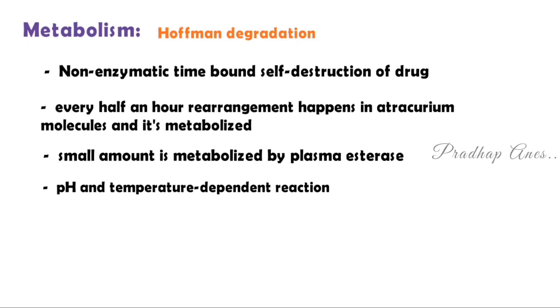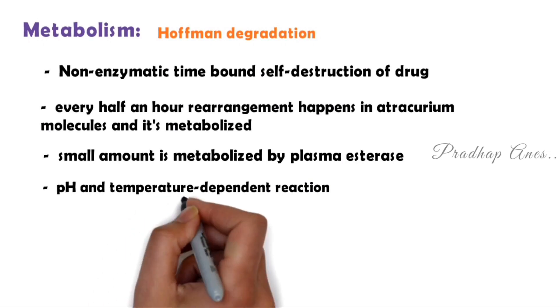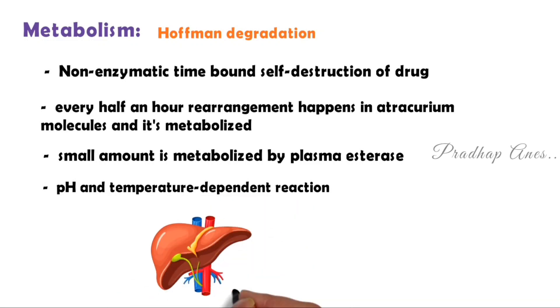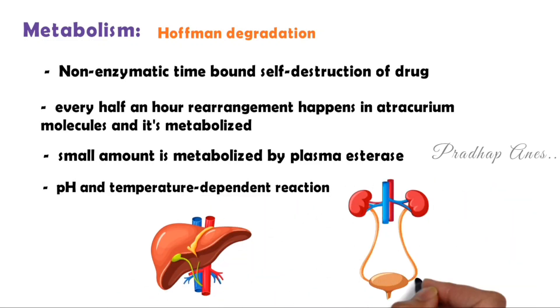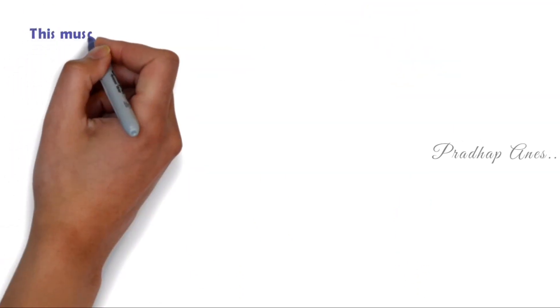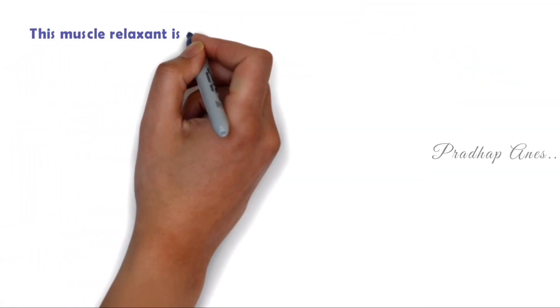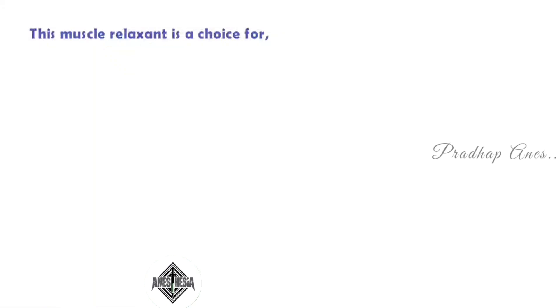Since it is metabolized by Hoffman's degradation, it doesn't need the liver and kidney for its metabolism. So this muscle relaxant is a choice for patients with hepatic or renal impairment.